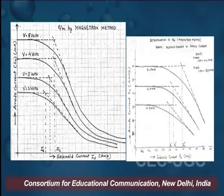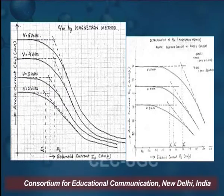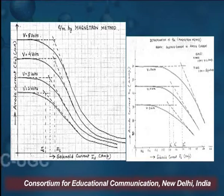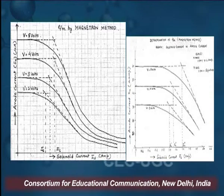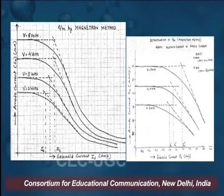These two graphs represent the tangents. The first graph is Is versus Ic and the second is V versus Bc², that is anode potential versus critical magnetic field applied. From the slope of the second graph we put this value and calculate the e/m ratio.